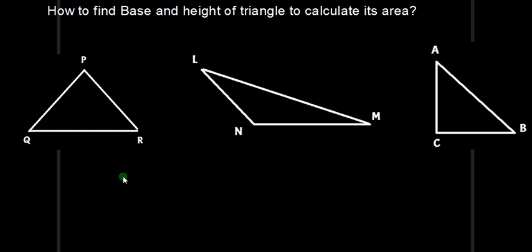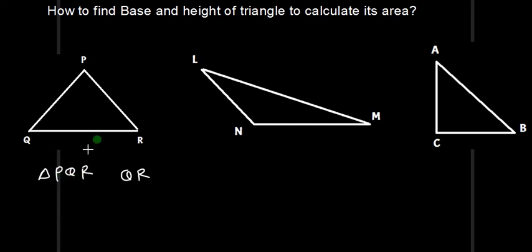So what we will do here — I will write the bases and we will decide the height. We have triangle PQR. If QR is taken as the base, then a perpendicular drawn from P on QR will be the height of the triangle.